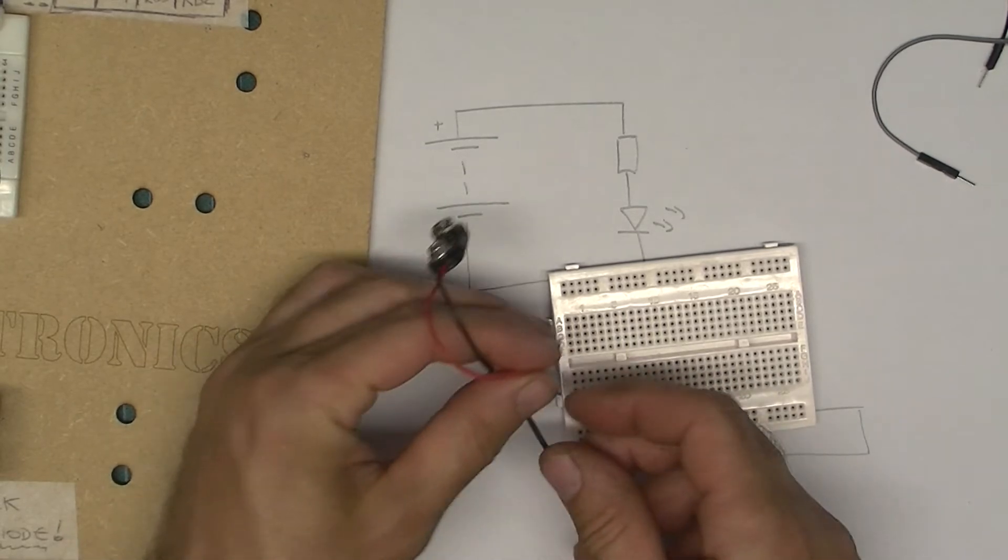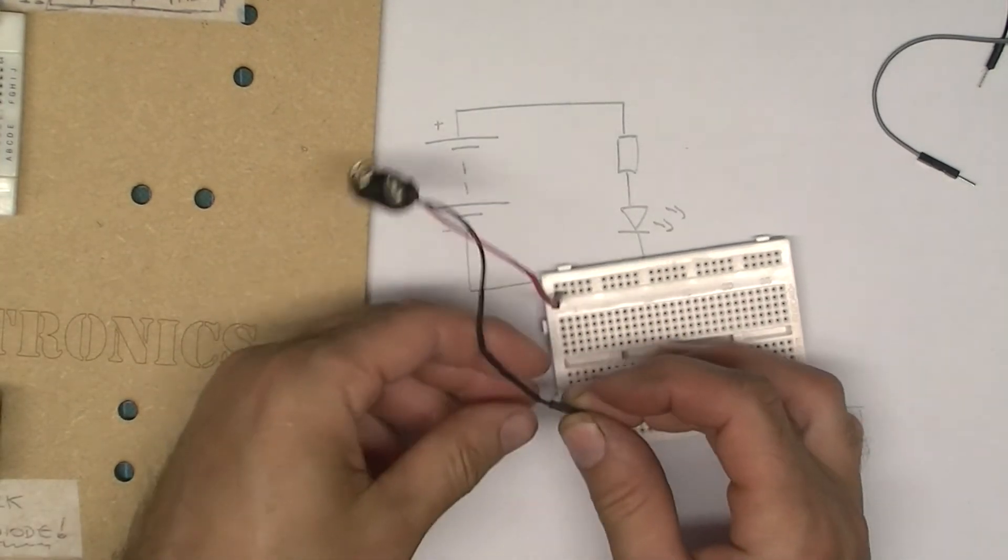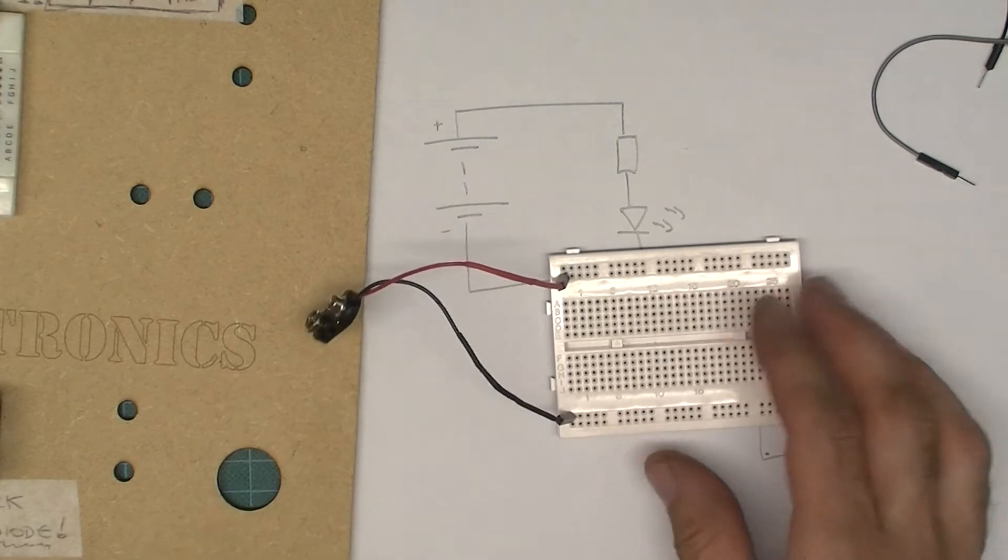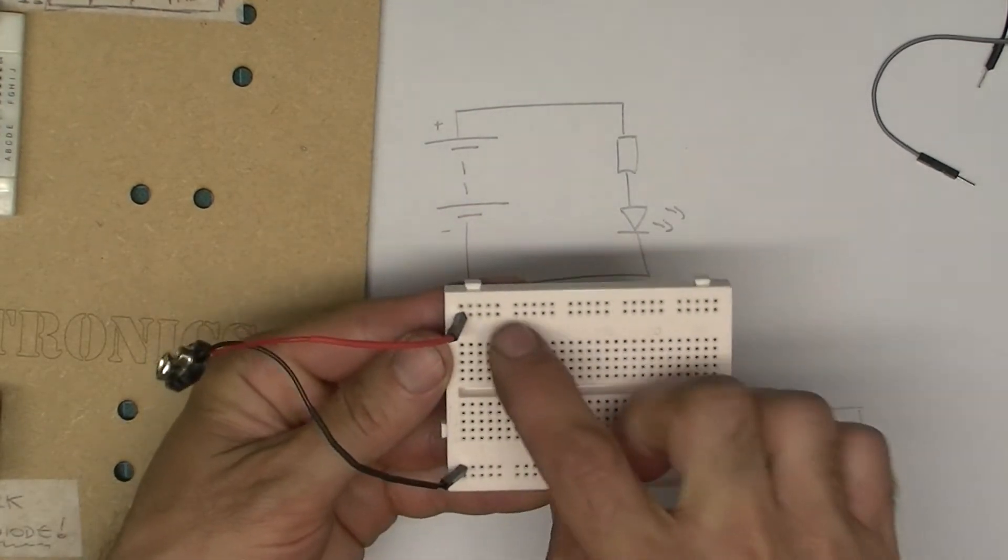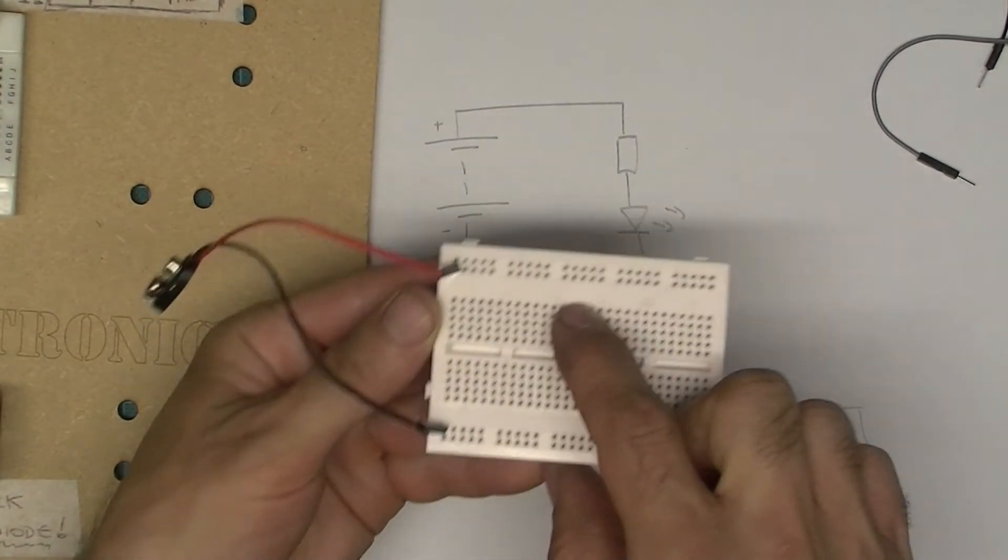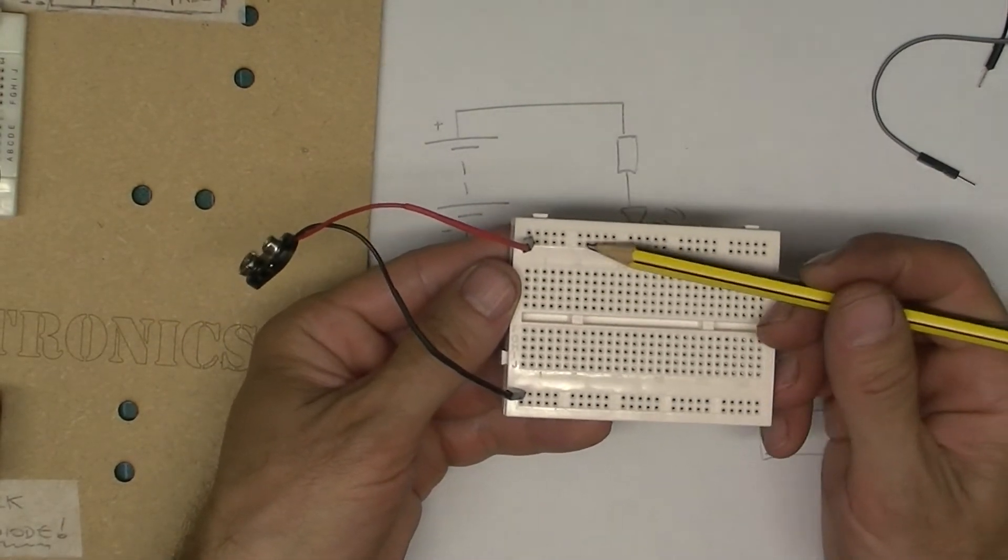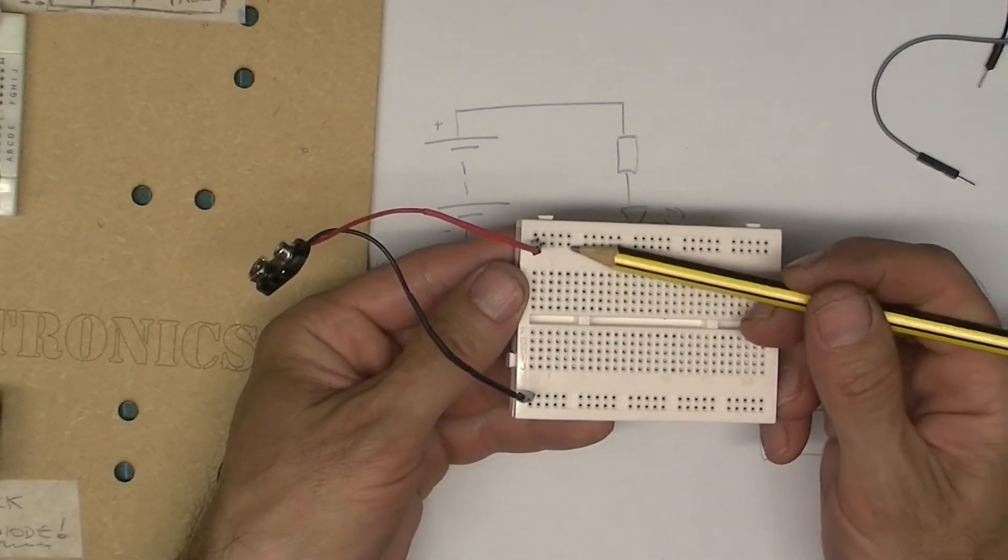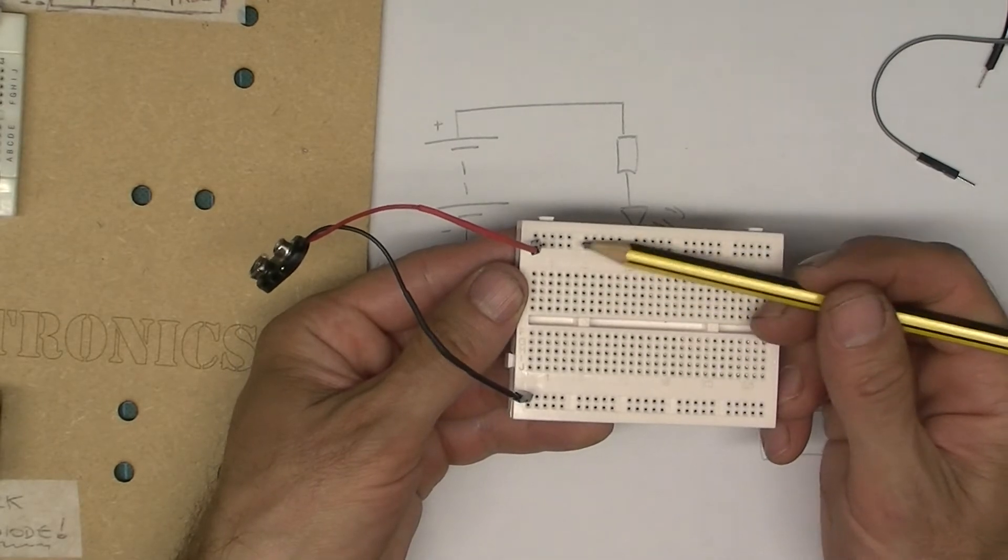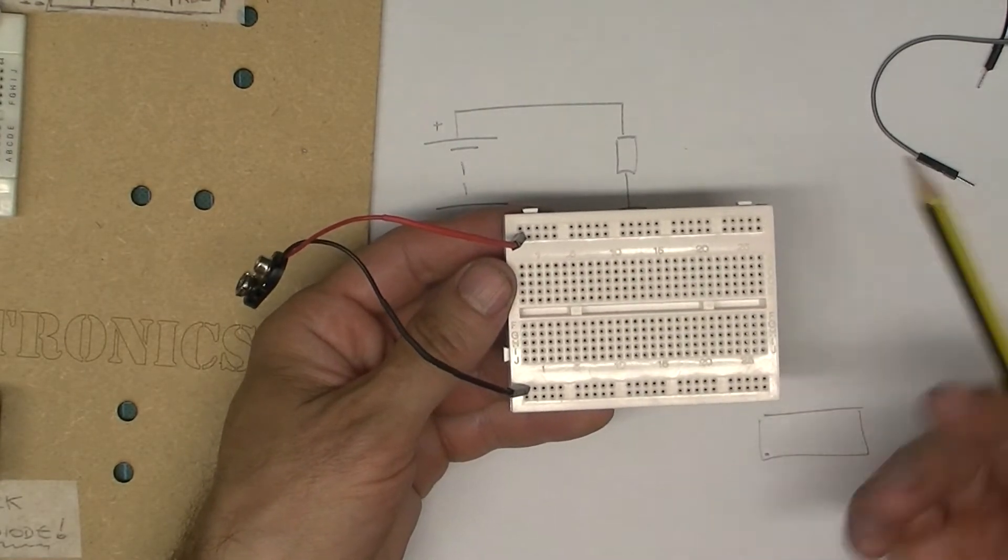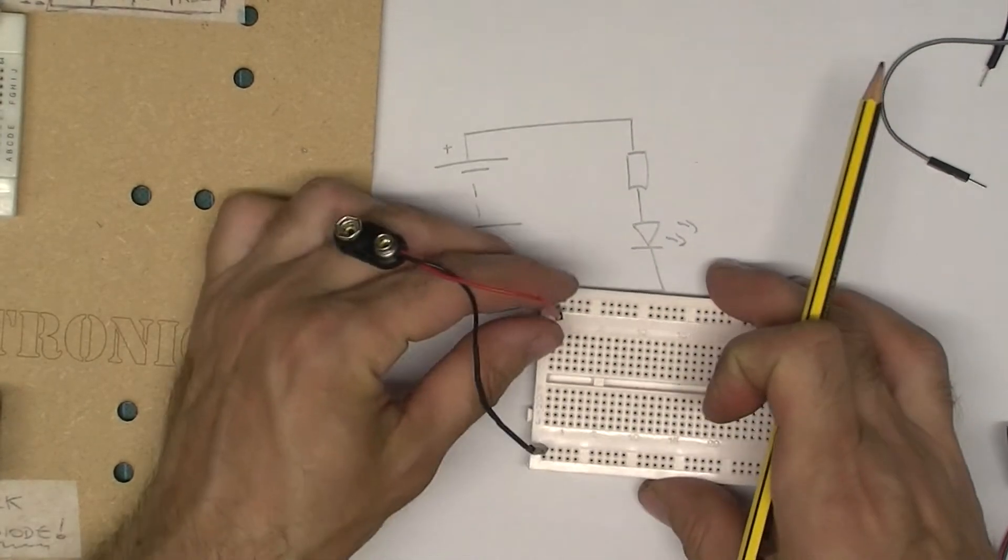Sometimes I might do it something like that. Notice I didn't use the very topmost one just because it's probably going to be easier for me to make a connection going across from the shorter distance rather than from the longer distance. That would be absolutely fine.